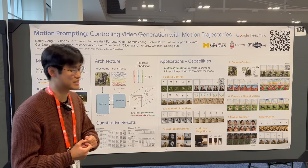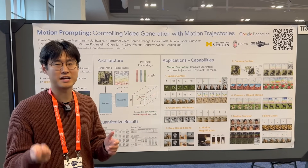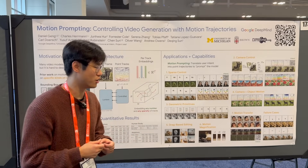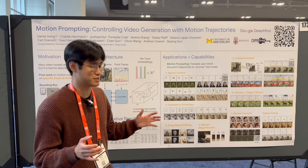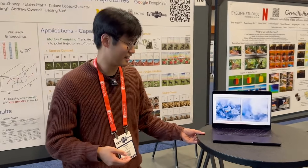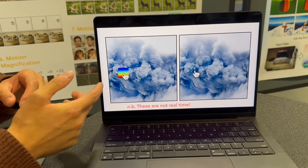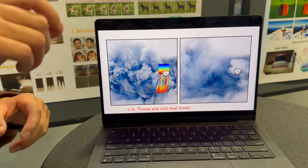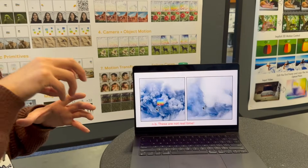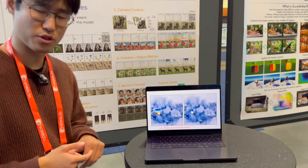So we come up with this idea of motion prompting, which at a high level is basically taking the user intent and translating that into point trajectories that we can then feed to our model. Video frames don't really come across well on posters, so I can show some examples right here. The idea is you take user inputs in the form of mouse drags and clicks, and you convert that into point tracks by copying and pasting tracks and following exactly the motion of the mouse. Then you feed that to the model, and you can control the motion of a generated video.